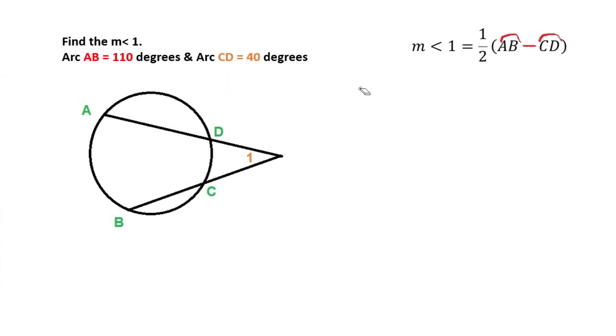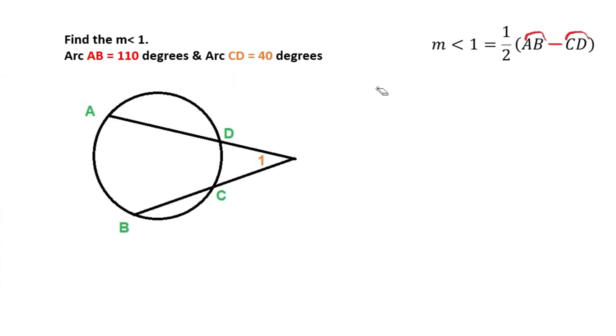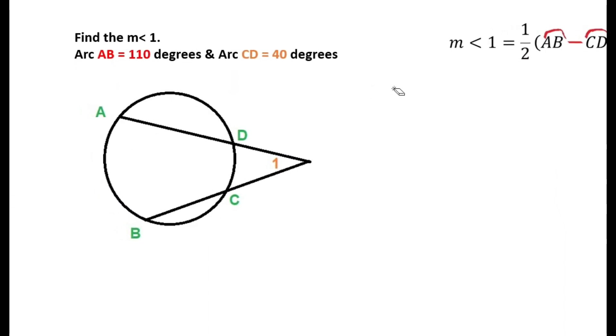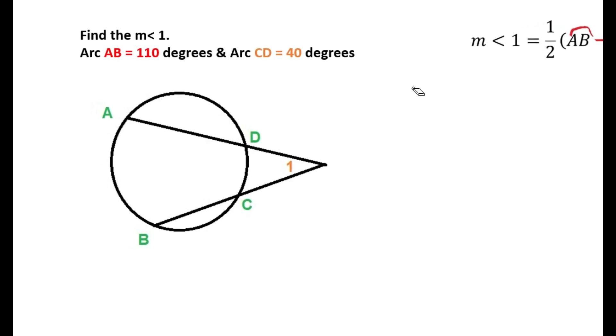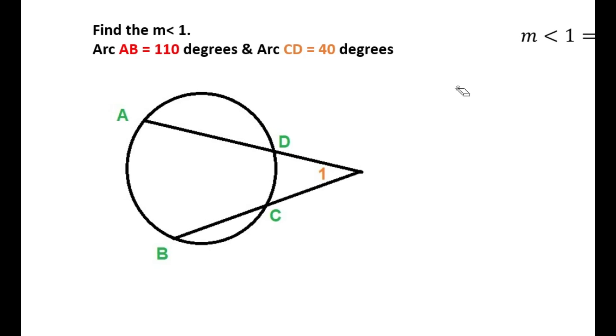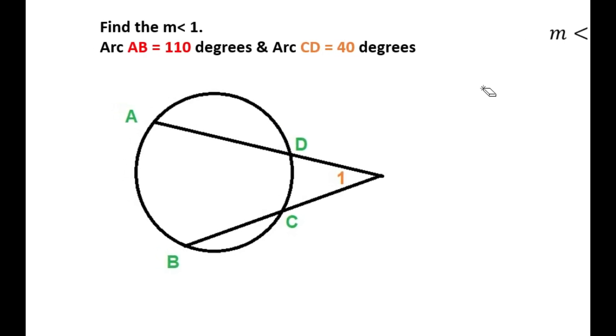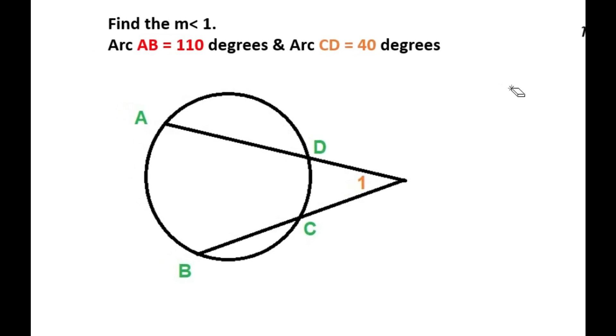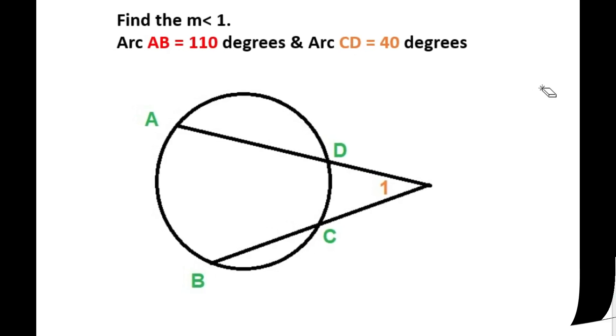Let's take a look at a problem. Find the measure of angle one, given that arc AB, which is our major arc, is equal to 110 degrees, and arc CD, the minor arc, is equal to 40 degrees.